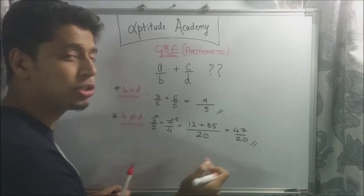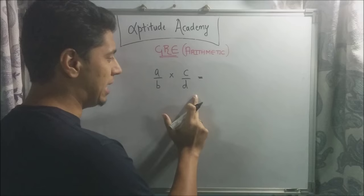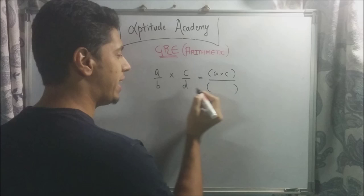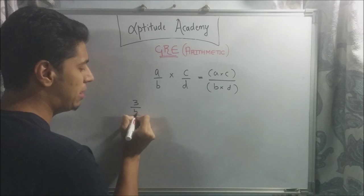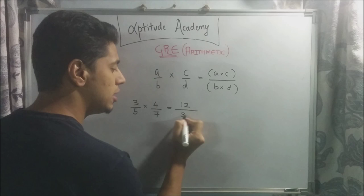Now let's see how to multiply and divide fractions. Multiplication of fractions is probably the easiest operation in fractions. So suppose you have to multiply A by B into C by D. Now what you're going to do is the product of these two fractions will be the separate multiplications of the numerators and the separate multiplications of the denominators. So your product will be A into C divided by B into D. That's it. So let's take an example. If you have 3 by 5 and you want to multiply it by 4 by 7, so the answer will be the separate multiplication of the numerators. 3 times 4 is 12 and 5 into 7 is 35. So 12 by 35 is your product.